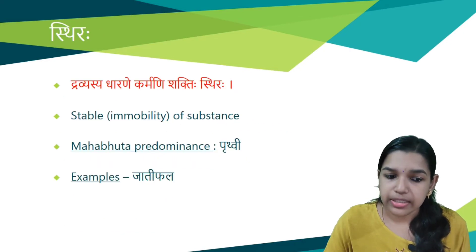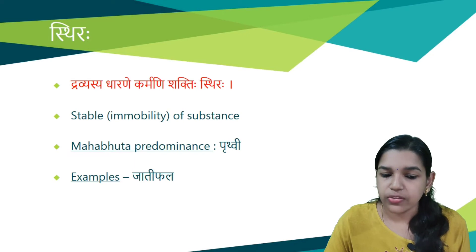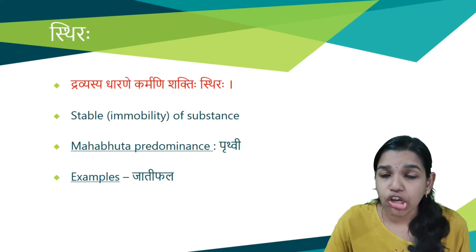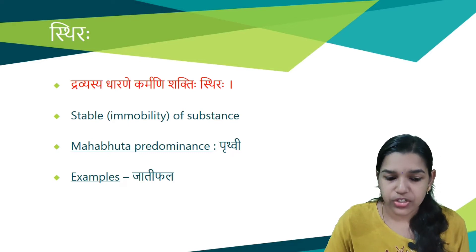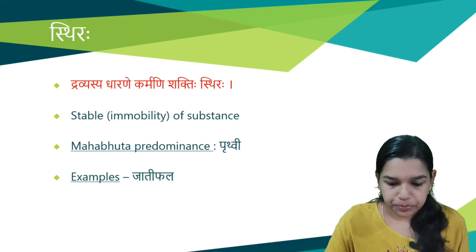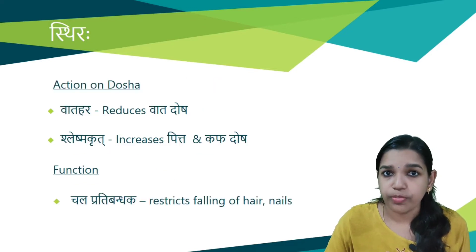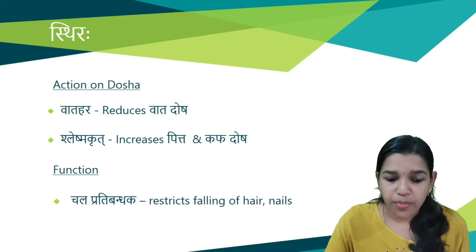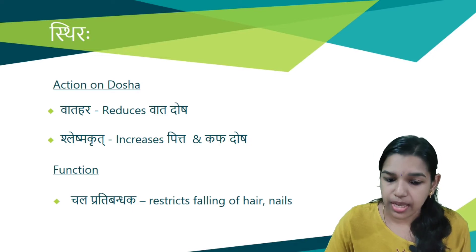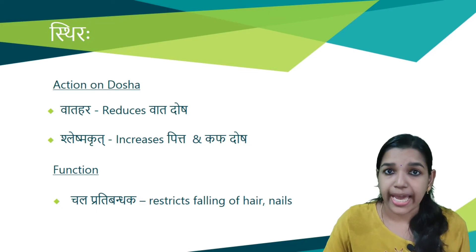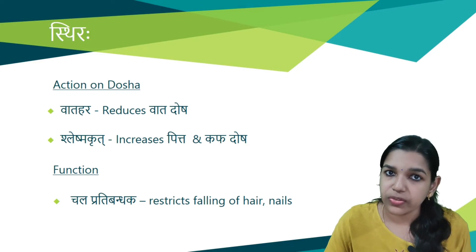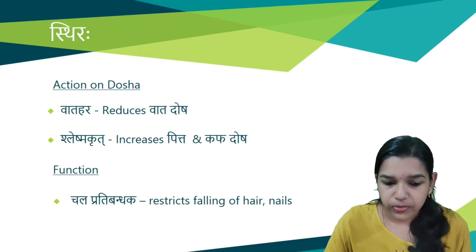Next is Sthira guna. Dravyasya dharane karmani shakti hi sthira ha. That is the stability or immobility of a substance is called Sthira guna. Prithvi is the predominant Mahabhuta. Example is jadibhala. The actions carried out are vata hara, that is reduces vata dosha, and Shleshma krit, that is increases pitta and kapha dosha. The function is chala prathibandhaka, that is it restricts falling — for example, of hair, nails, etc. Such falling of substances is restricted by the Sthira guna.